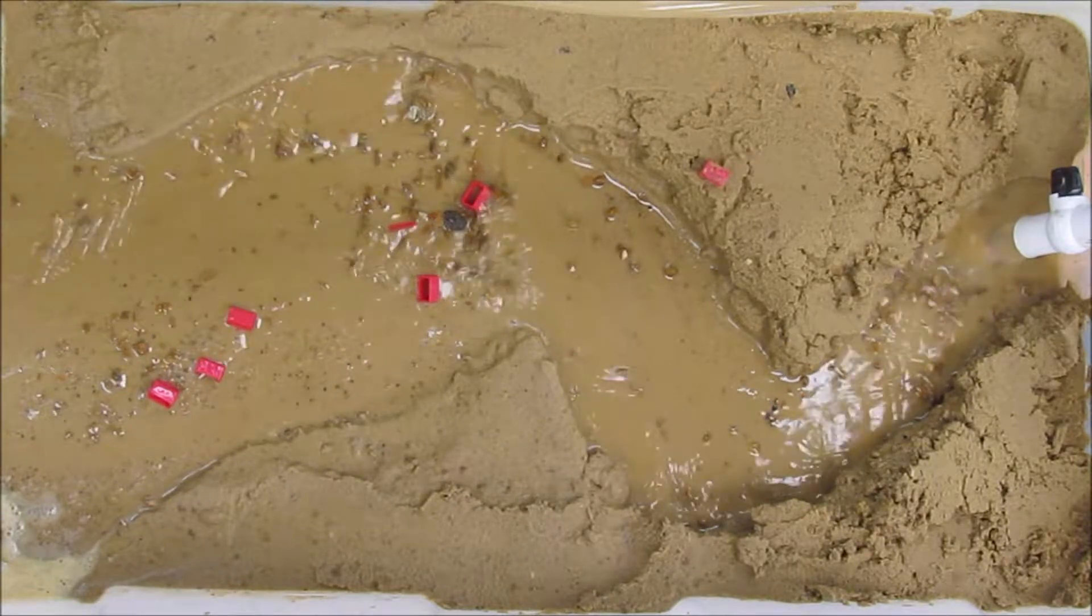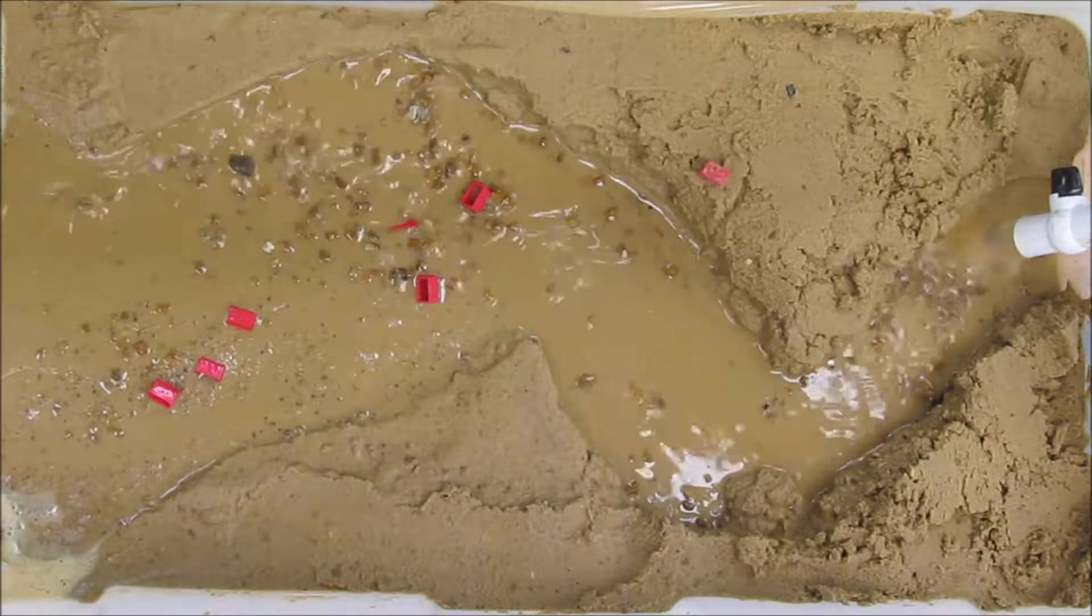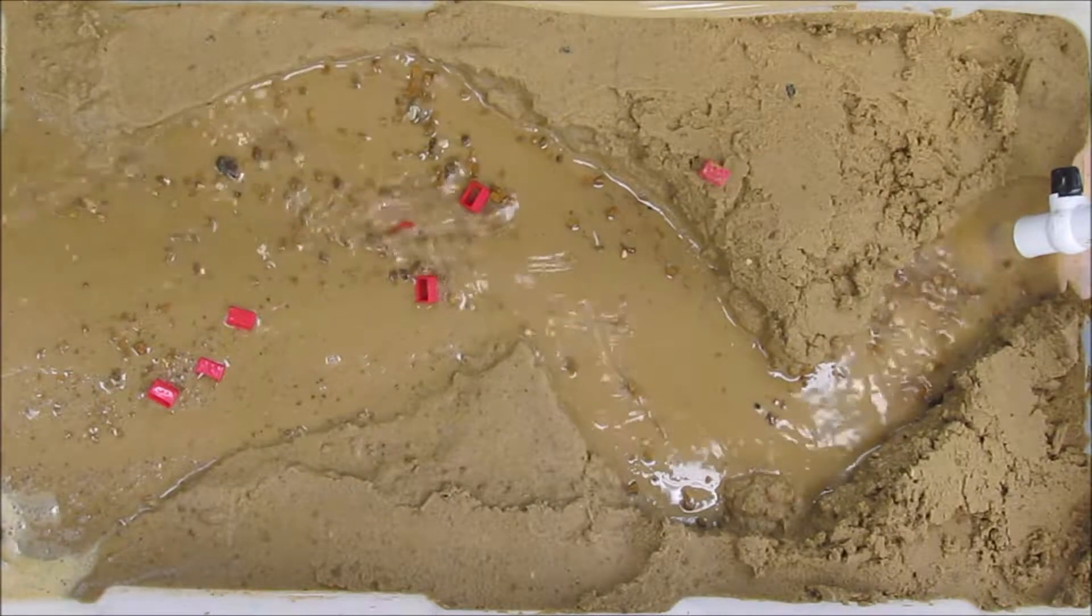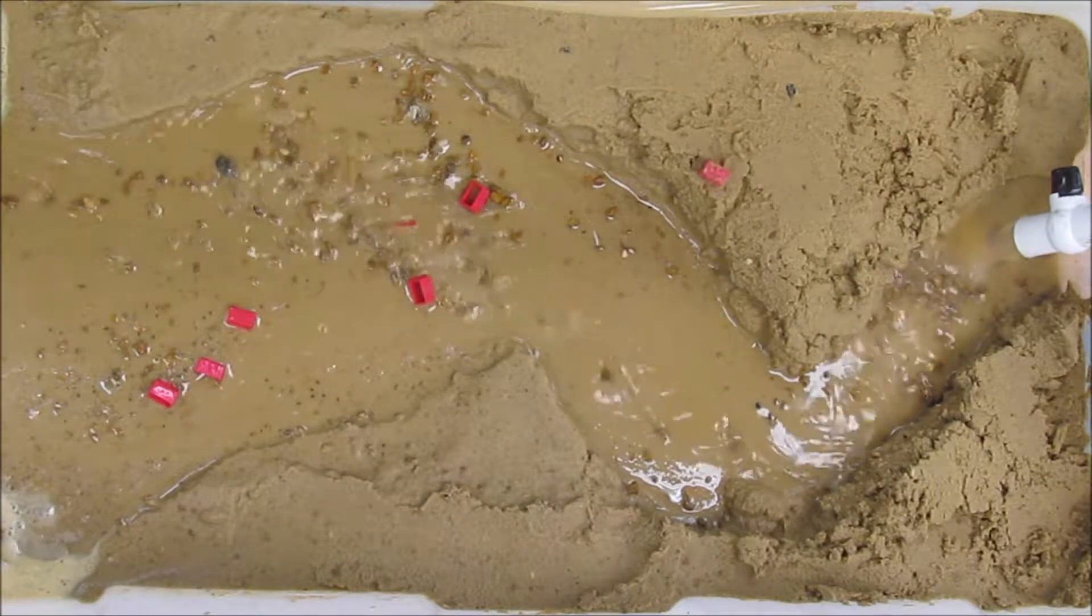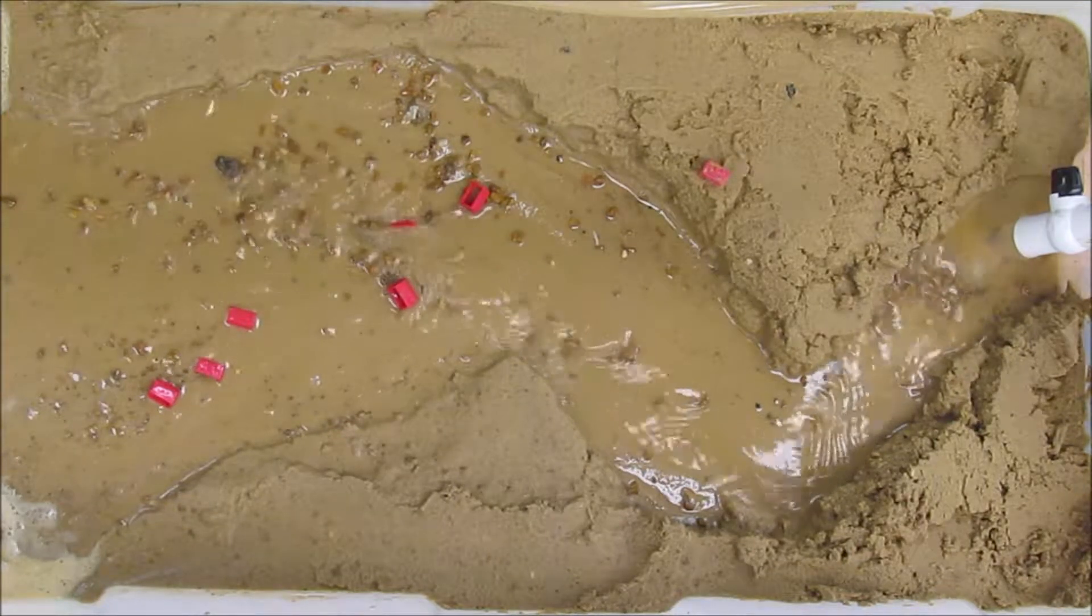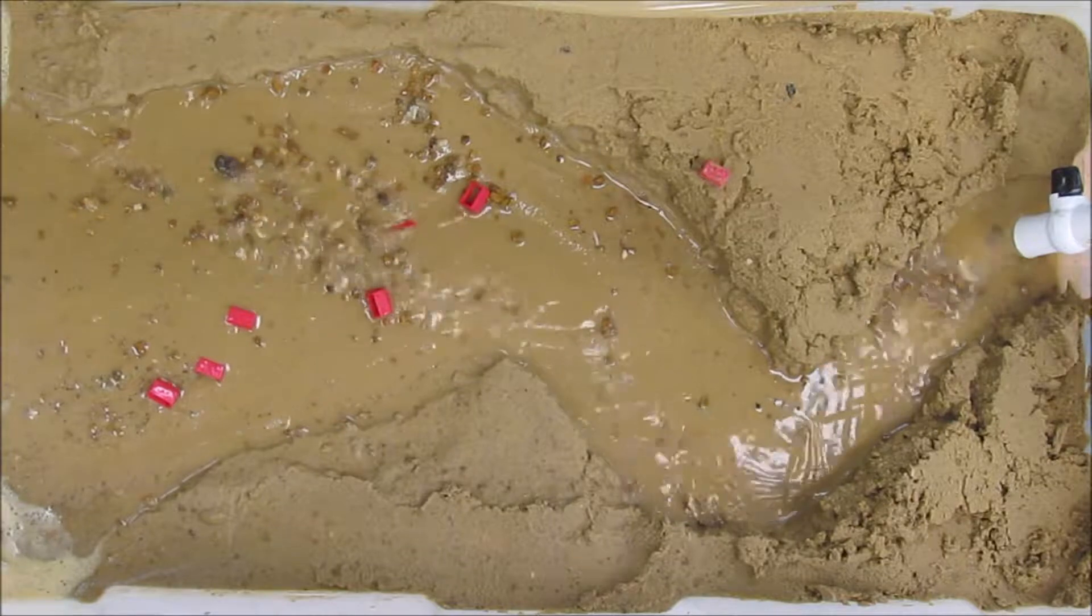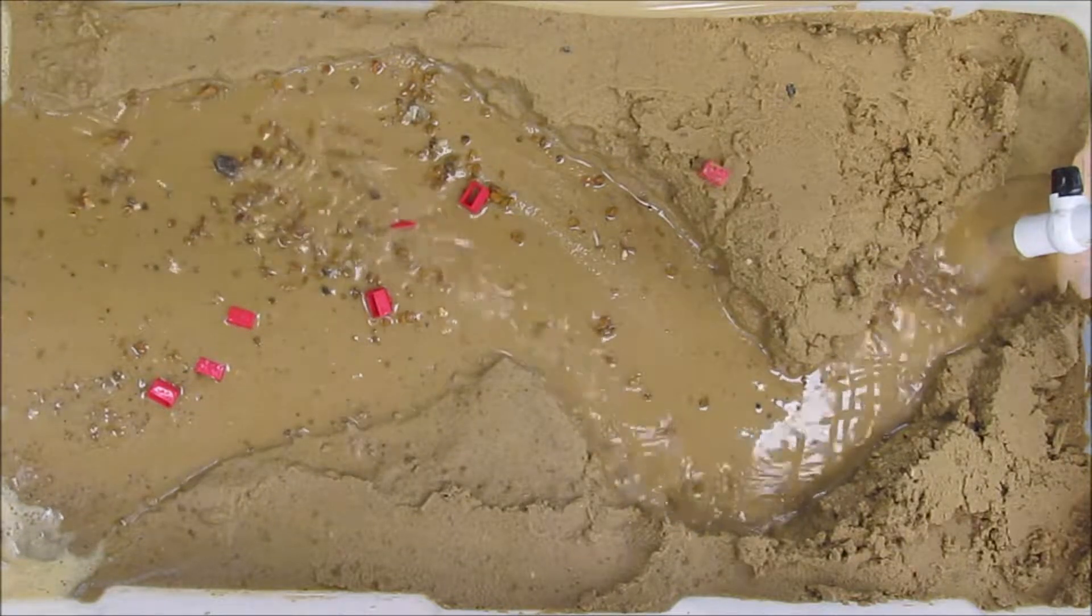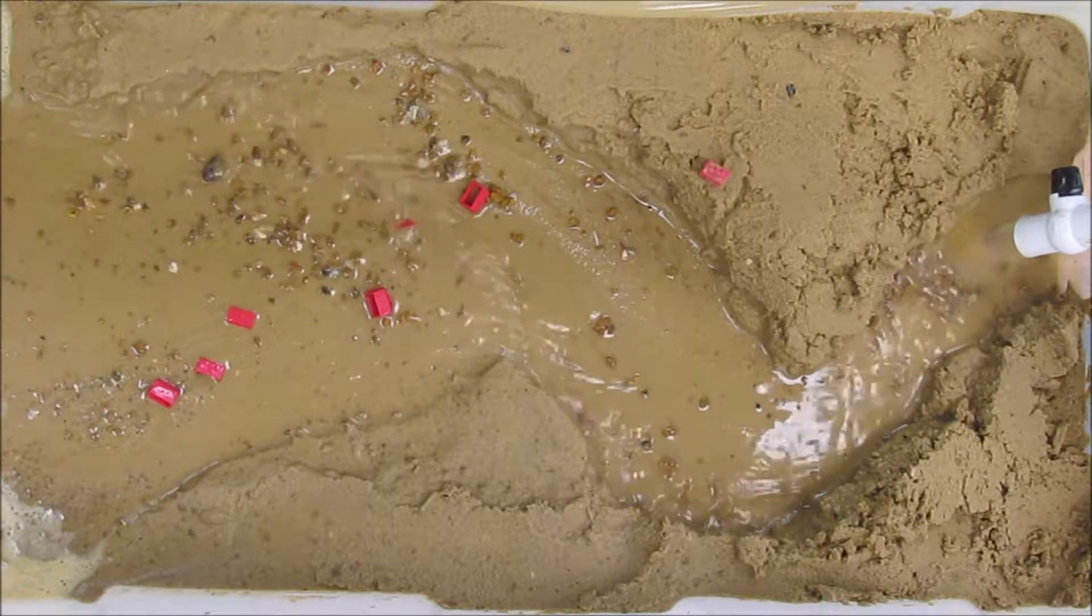Often rivers will cut meanders completely off, forming a cutoff which then leaves part of the river behind. We call it an oxbow lake. If you look at a map of Frankfurt, you'll see some old oxbow lakes and cutoff meanders in that area.